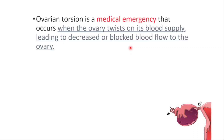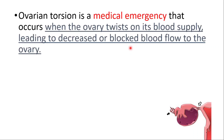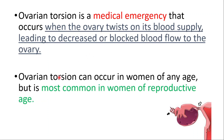In this video we're going to talk about signs, symptoms and treatment of ovarian torsion. It's a medical emergency that occurs when the ovary twists on its own blood supply, leading to decreased or blocked blood flow to the ovary. It can occur in any woman, but it's most common in women of reproductive age.